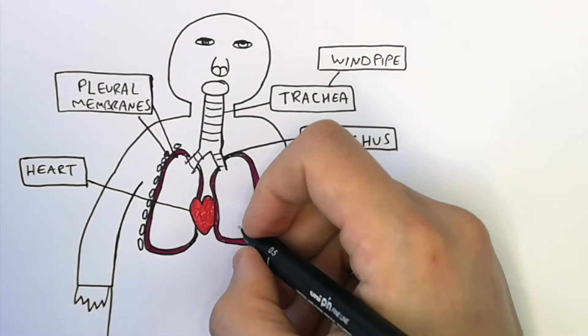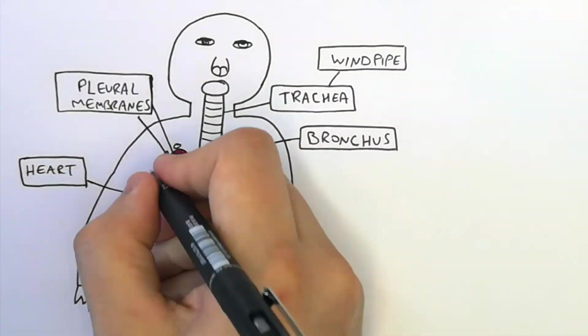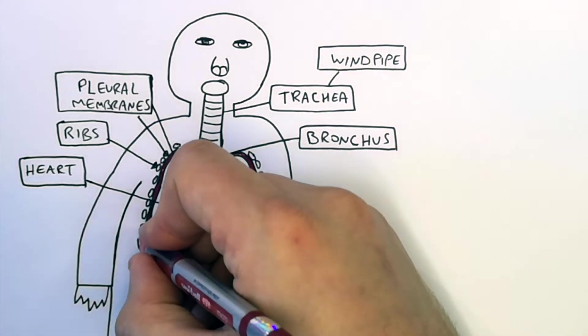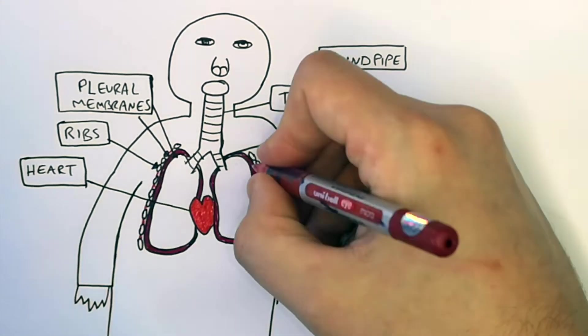The lungs are surrounded by our ribcage. They're surrounded by ribs. Ribs act to protect the lungs from damage via impact. Our bones, called the ribs, are connected via intercostal muscles.